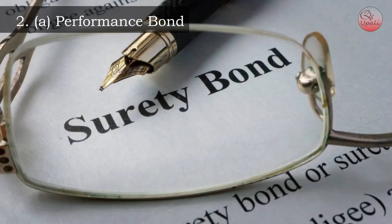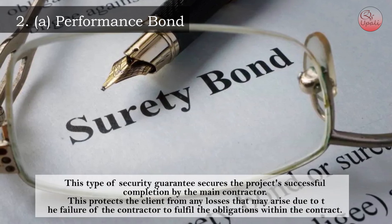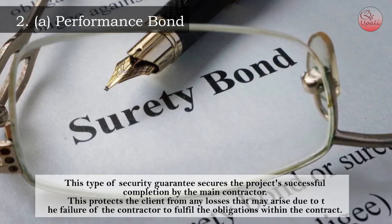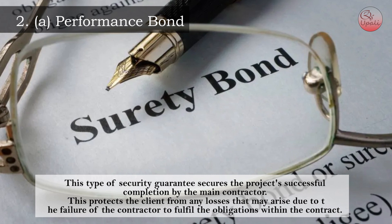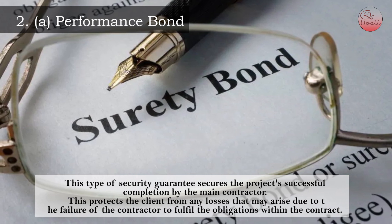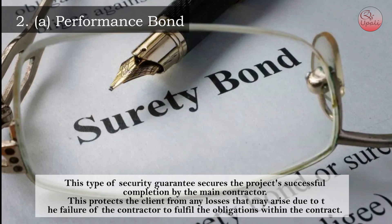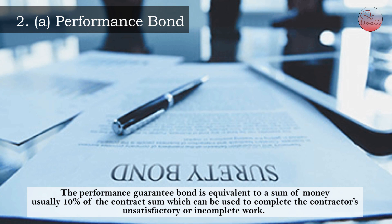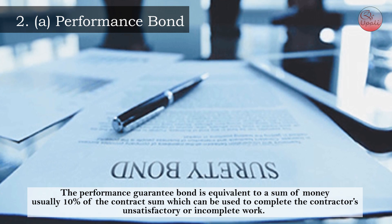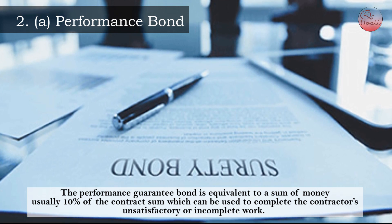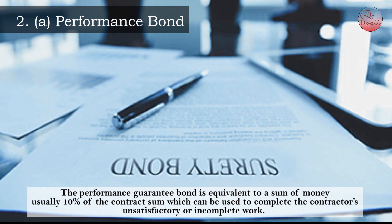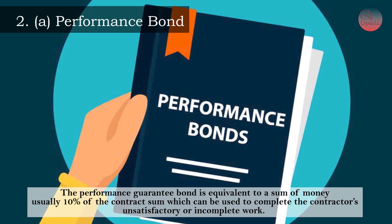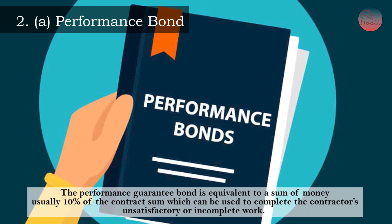A) Performance Bond. This type of security guarantee secures the project's successful completion by the main contractor. This protects the client from any losses that may arise due to the failure of the contractor to fulfill the obligations within the contract. The performance guarantee bond is equivalent to a sum of money, usually 10% of the contract sum, which can be used to complete the contractor's unsatisfactory or incomplete work.